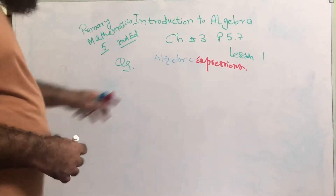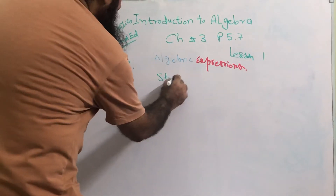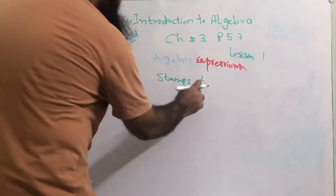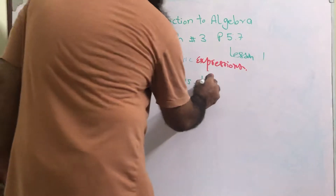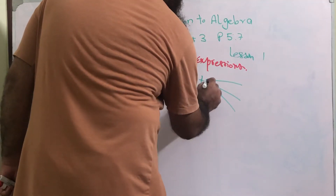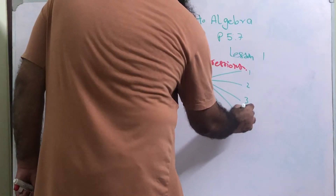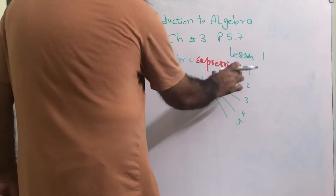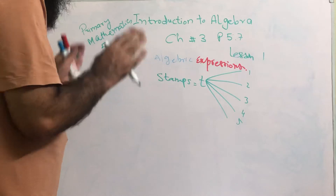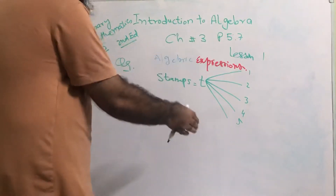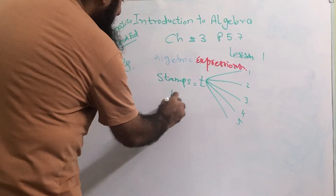Now we will be doing question number 9, page 57. The question is: Tom has t stamps. He has to put an equal number of stamps in five albums — one, two, three, four, five. Every album will get the same number of stamps. When the same numbers are added to different groups, we divide, so t is divided into five groups.